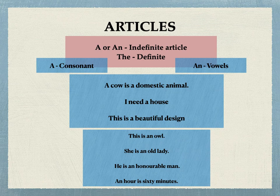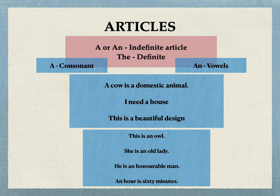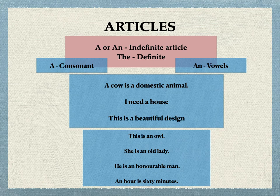Look at 'He is an honorable man.' Though H is written, the pronunciation starts with the O sound — H is silent. We pronounce it 'honorable', not 'h-onorable'. Since the pronunciation begins with a vowel sound, it becomes 'an honorable man'. Similarly, 'An hour is 60 minutes' — we never pronounce the H in 'hour'; it begins with an O sound, and that is why 'an' is used again.